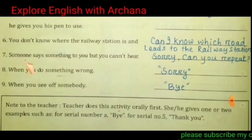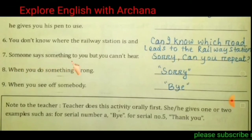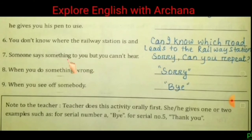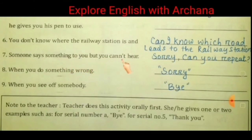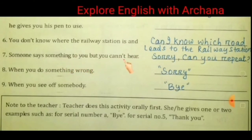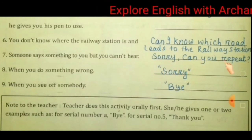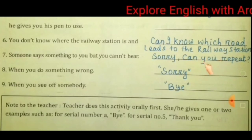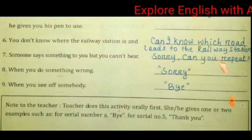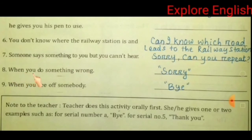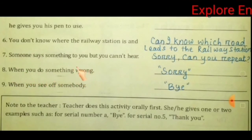Number 7: Someone says something to you but you cannot hear. What do you say? Sorry, can you repeat? Number 8: When you do something wrong, what do you say? Sorry.